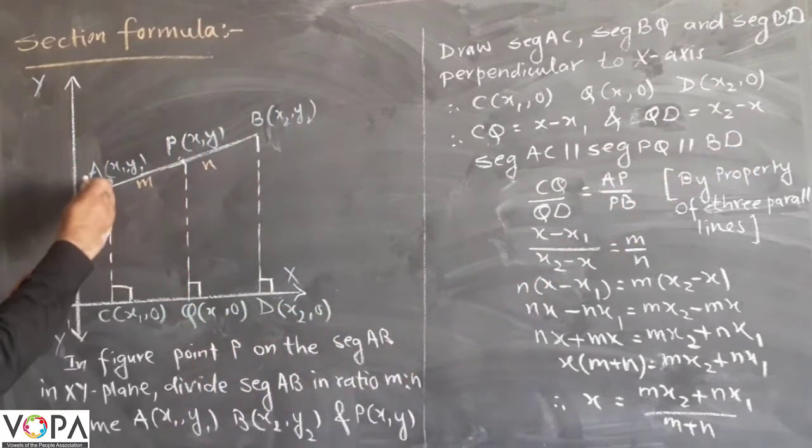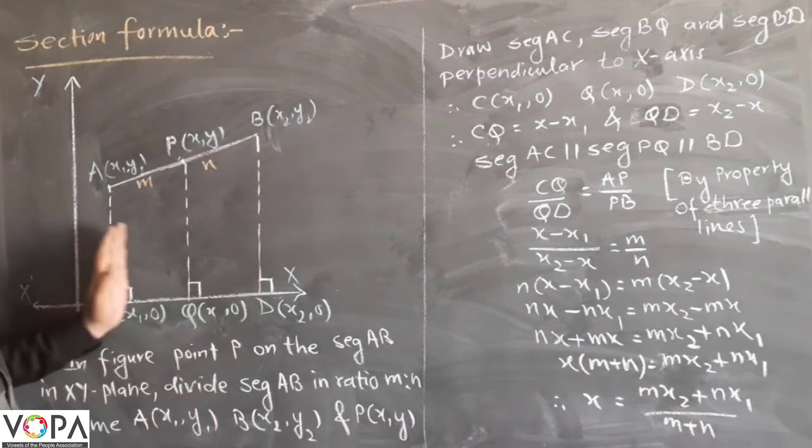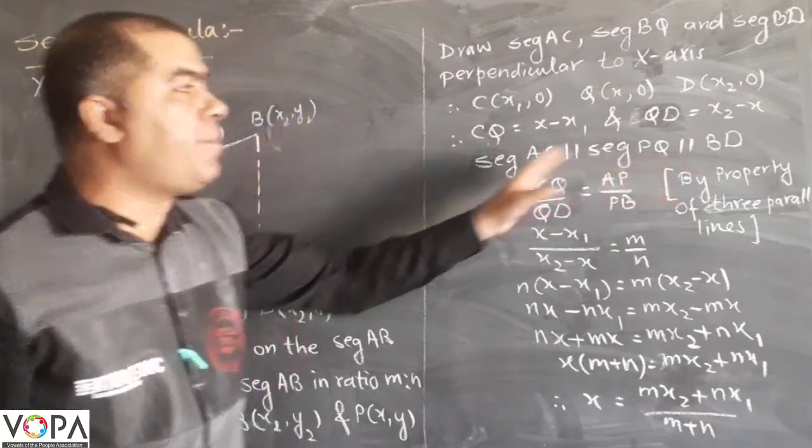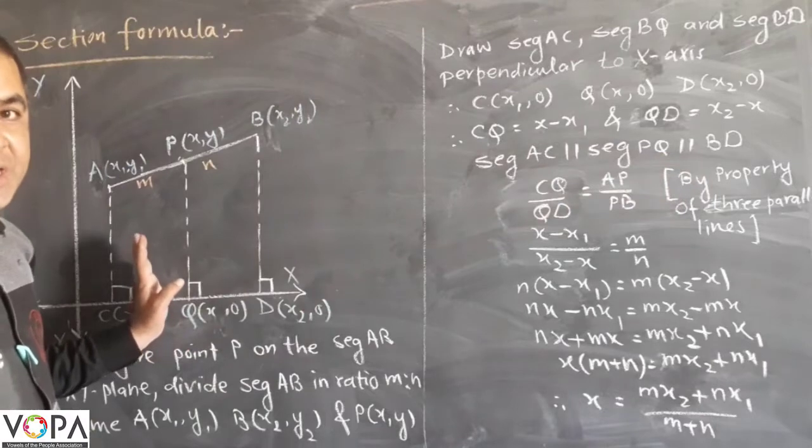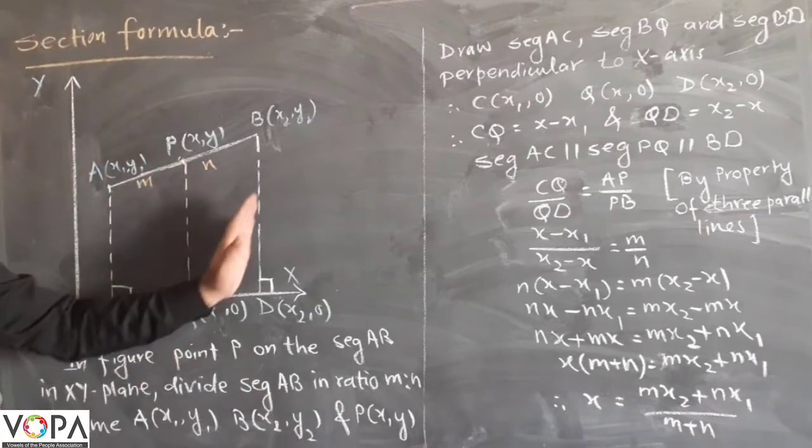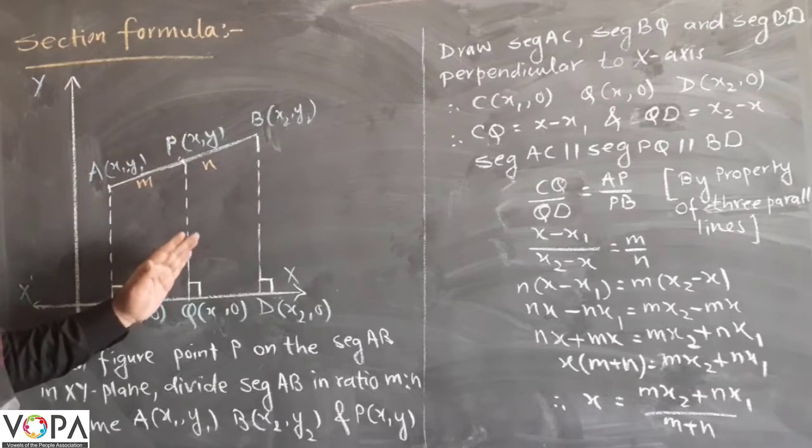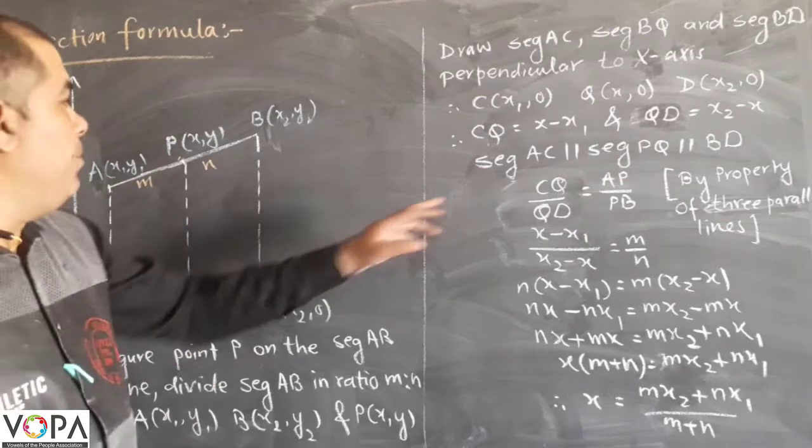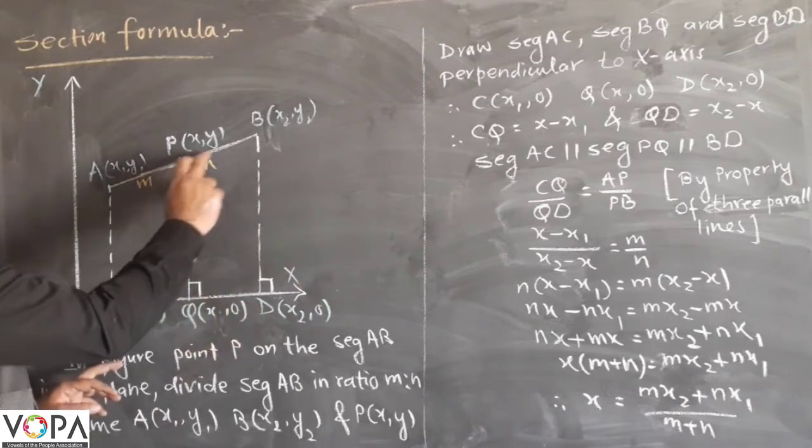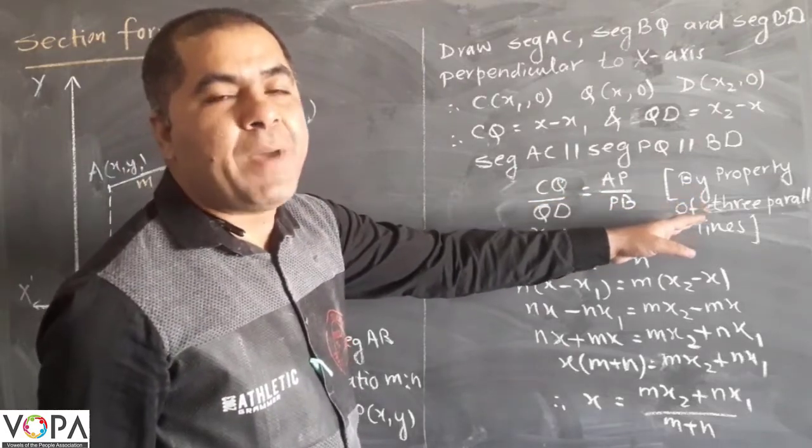Now these three lines AC, PQ and BD are parallel according to our construction. Using the property, these are the three parallel lines and intercepts made by the two transversals are in equal ratios, means the ratio CQ upon DQ will be equal to AP upon PB.